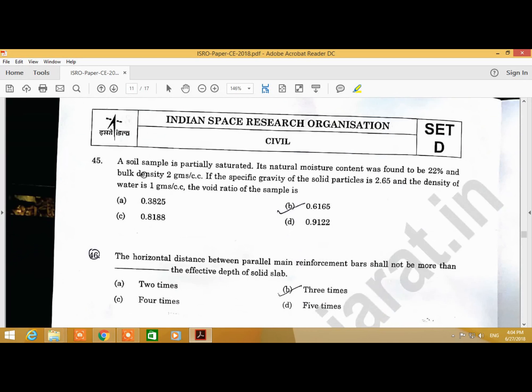Question Number 45: A soil sample is partially saturated. Its natural moisture content was found to be 22%, bulk density 2 g, and the specific gravity of the solid particle is 2.65. The density of water is 1 g per. The void ratio of the sample is B, 0.6165.